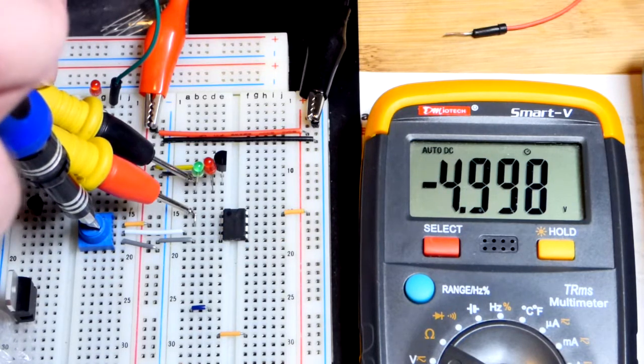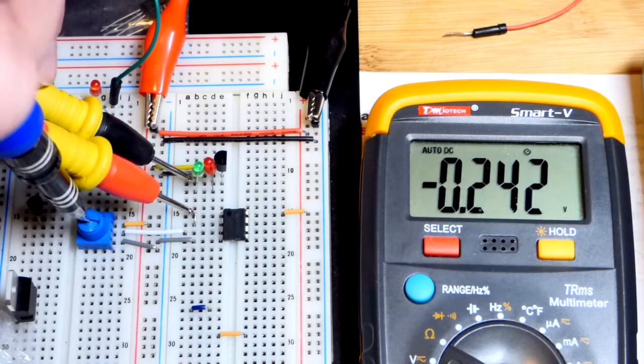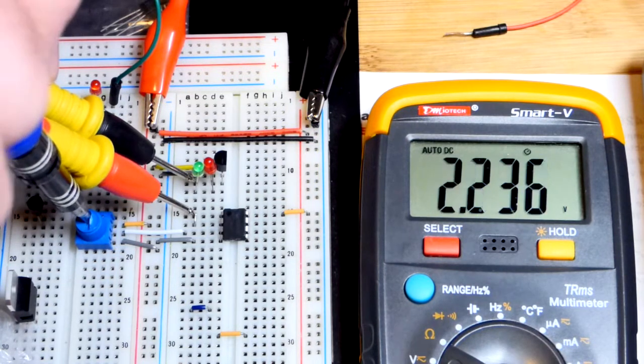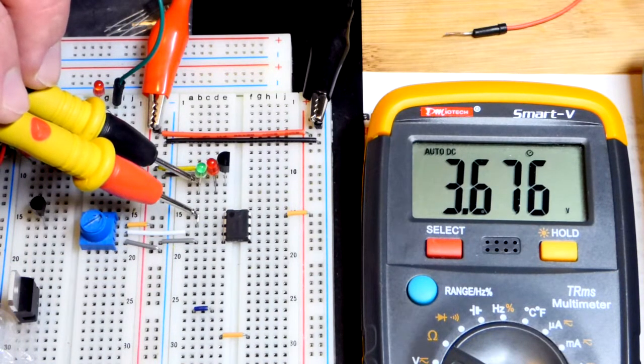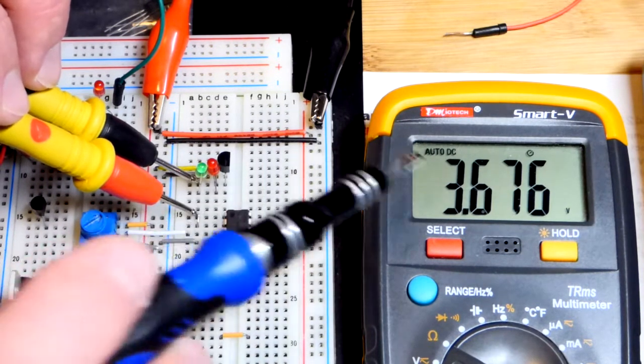I don't know how much current it can go where it gets to the negative rail. But the more current it needs, it doesn't quite get all the way.